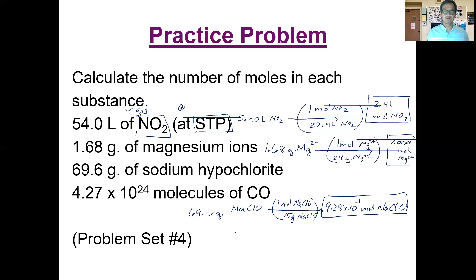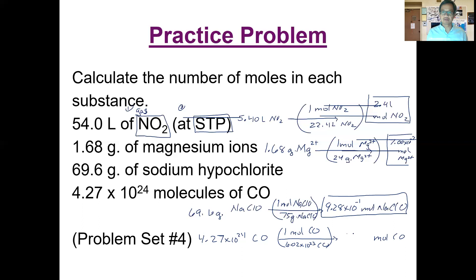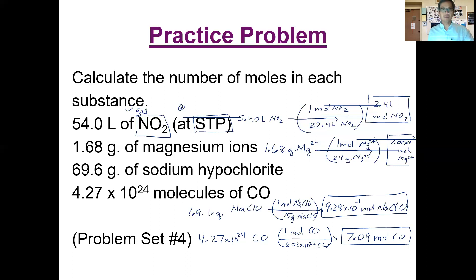For the last one, we're starting with particles of carbon monoxide, so we'll use Avogadro's number. We have 4.27 × 10²⁴ molecules of CO and we're finding the moles of CO. We divide by Avogadro's number: 1 mole CO over 6.02 × 10²³ particles of CO, and the final answer is 7.09 moles of carbon monoxide. Please make sure you review that — you'll need these conversions from Chapter 10 moving forward.